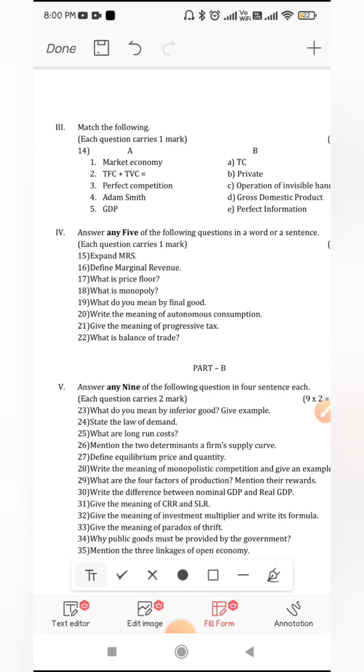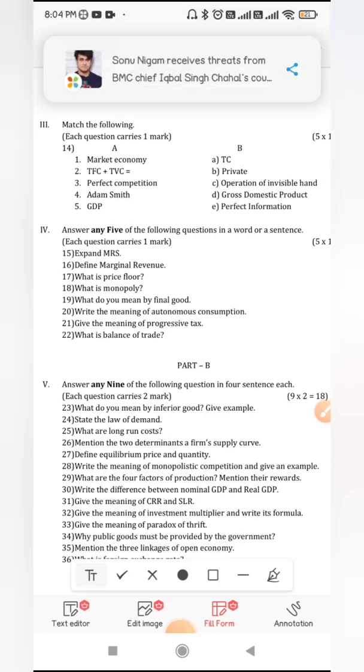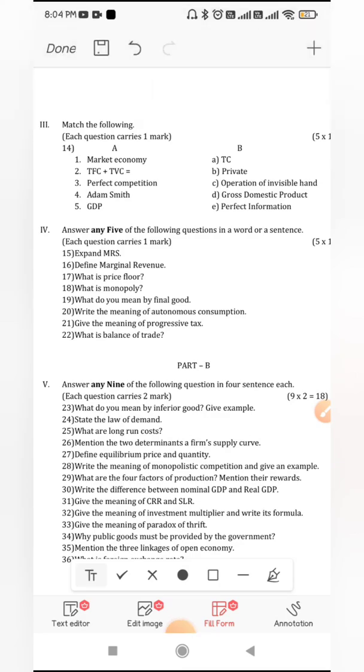Give the meaning of the autonomous consumption which is irrelevant to your income such is autonomous consumption. What is the give the meaning of the autonomous consumption? The consumption which is irrelevant to income which has no connection with your income. Whether you earn whether you do not earn but you have to go through with certain consumption which is called as autonomous consumption. The consumption which is independent of the income.